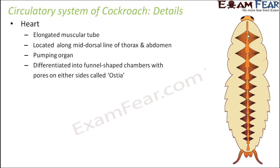The heart is differentiated into funnel-shaped chambers with pores on either side called ostia. In the picture you can see these funnel-shaped chambers, and each chamber has pores on either side known as ostia. We will see the role of ostia and why these funnel-shaped chambers exist shortly.